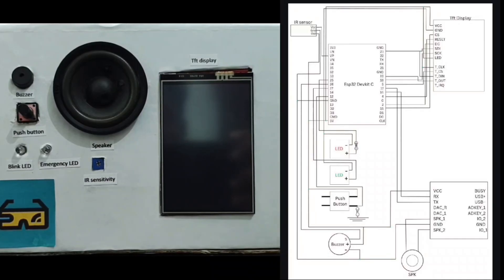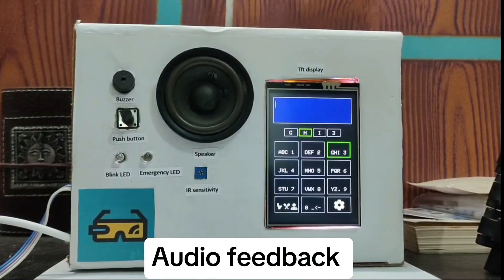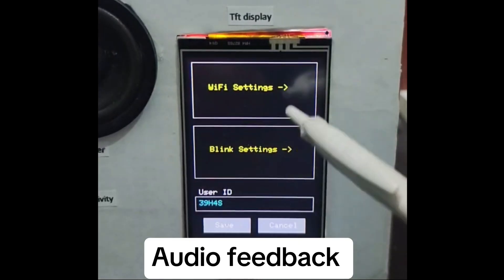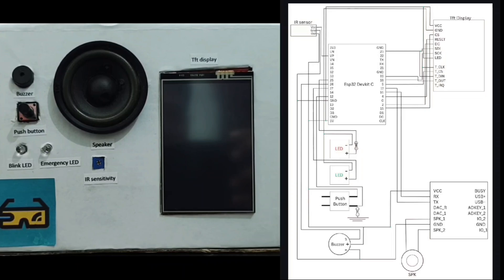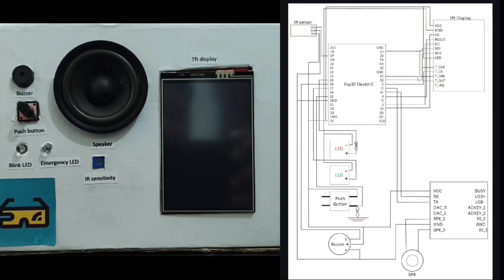Now let's see the components used in it. A buzzer, a push button, LEDs for visual feedback, and a speaker for audio feedback. This device is controlled by your eye blinks. To move forward, blink once. To select an option, blink twice. A potentiometer for setting the IR sensitivity and a TFT display allowing the users to communicate.